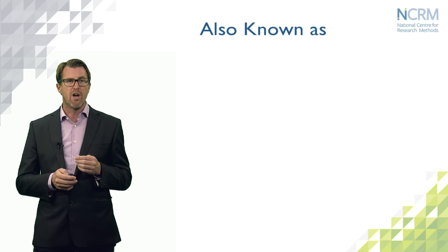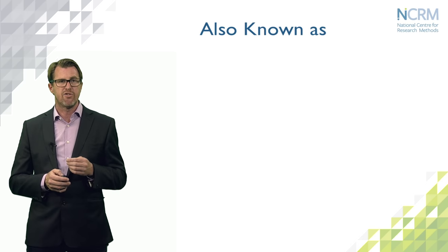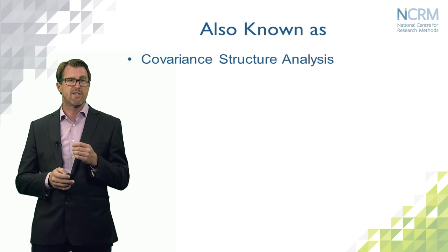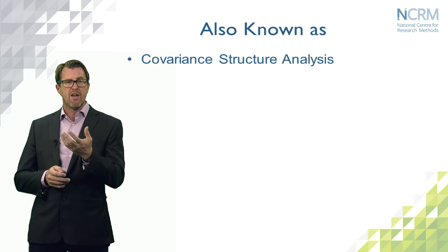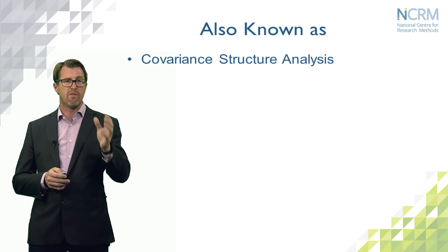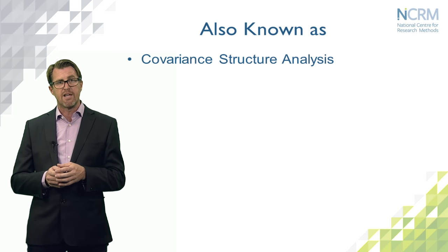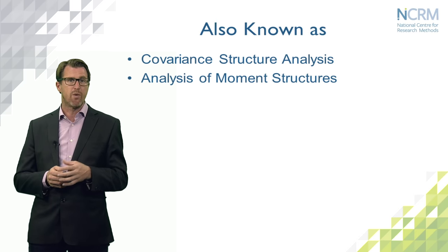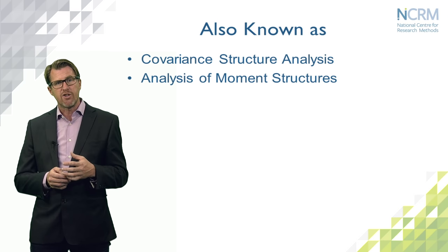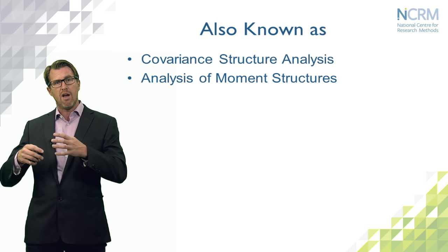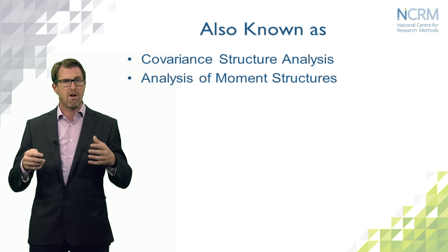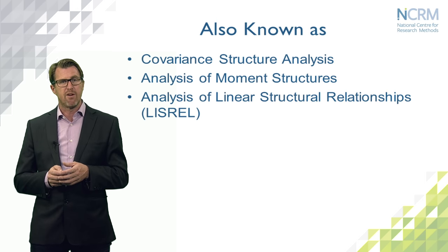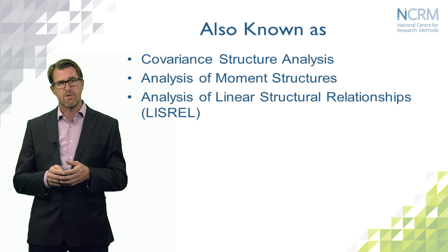SEMs are known by a number of different names in the existing literature, which can be somewhat confusing. Sometimes they're referred to as covariance structure analysis models — this relates to the fact that with SEMs we're actually analysing covariance matrices, not variables directly. They're also known as analysis of moment structures, which is what gives the SEM software AMOS its name, in recognition of the fact that modern SEMs analyse not just covariances but also means — so higher order moments. It's also known sometimes as a LISREL model, which takes its name from possibly the most well-known and certainly the first software for fitting SEMs.